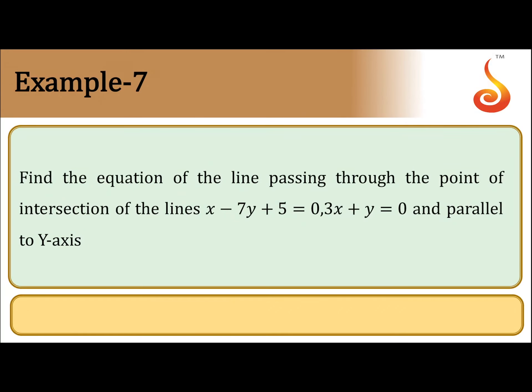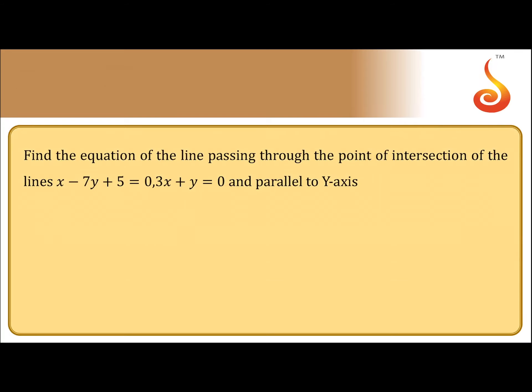Example 7. Find the equation of the line passing through the point of intersection of the lines x minus 7y plus 5 equals 0, and 3x plus y equals 0, and parallel to the y-axis.